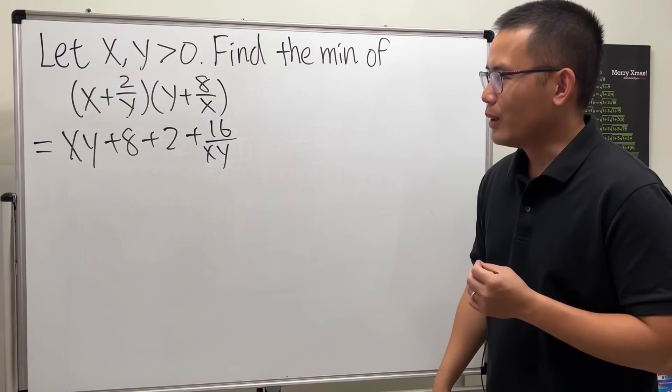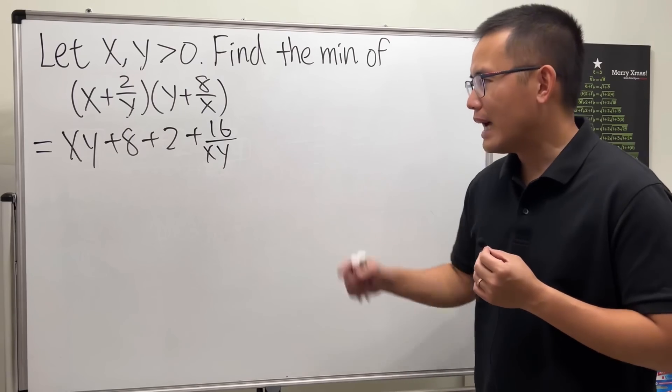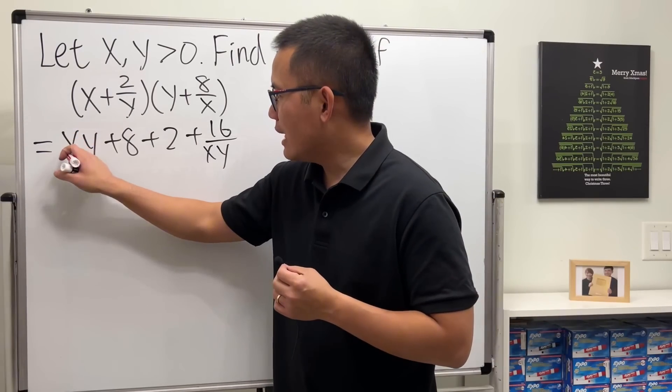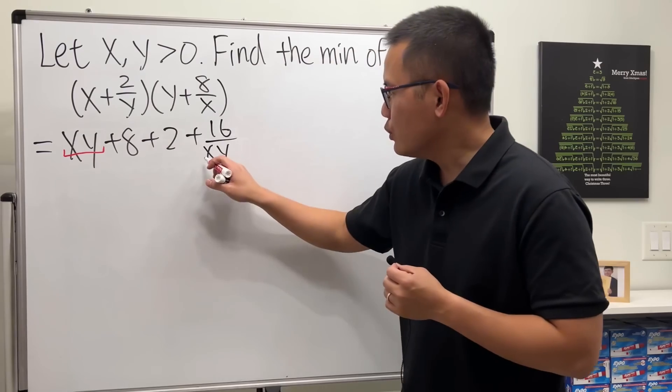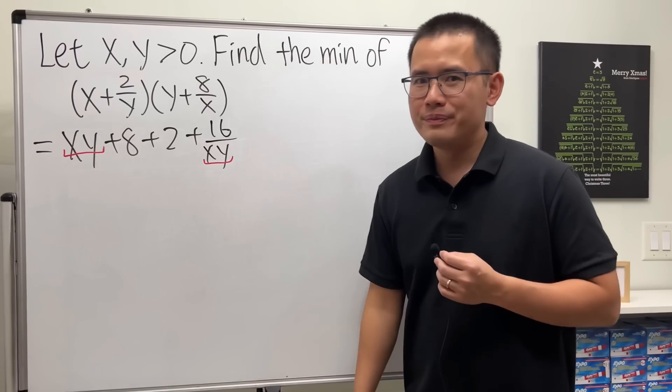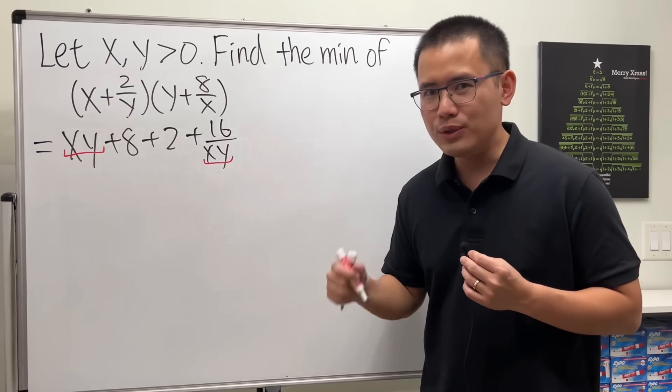Okay, so how can we continue though? Well, have a look right here. Notice we have xy here and then we also happen to have xy on the bottom.